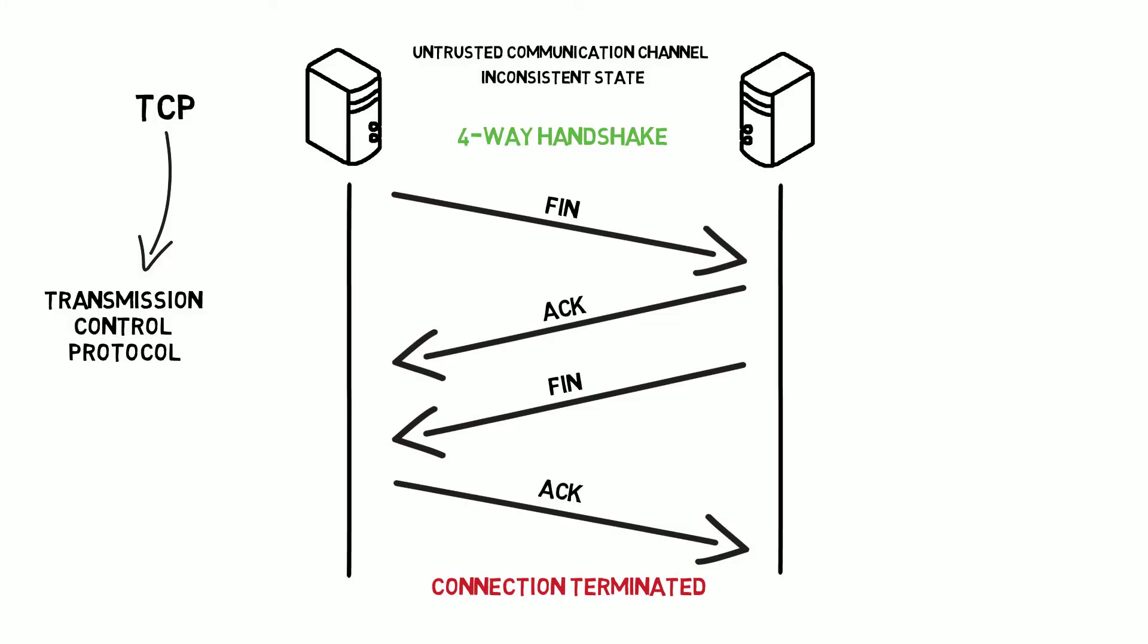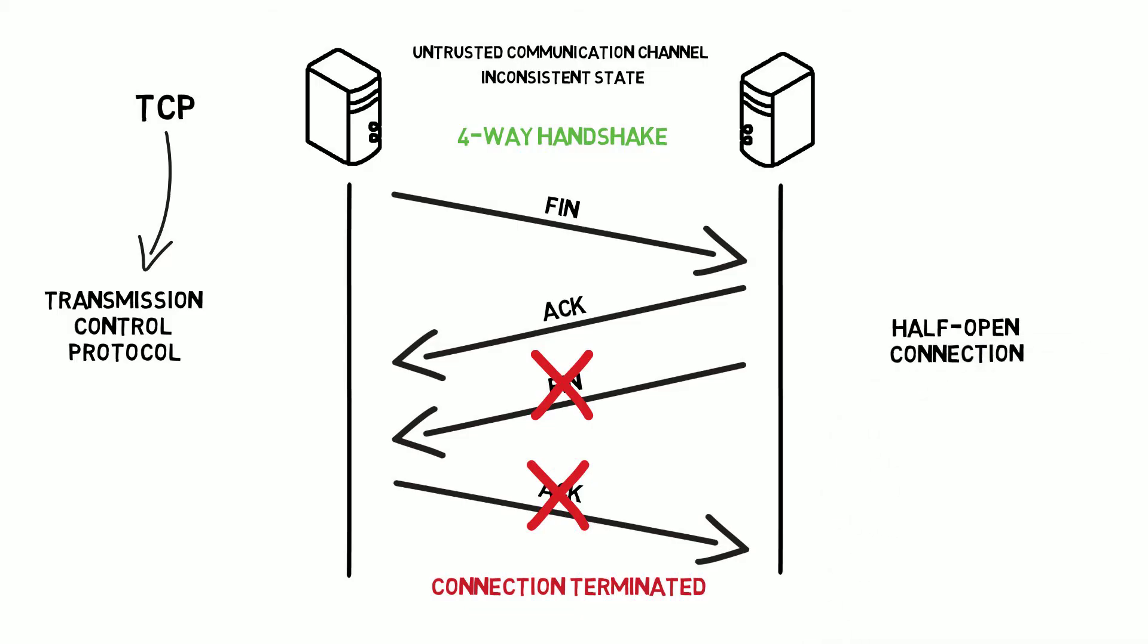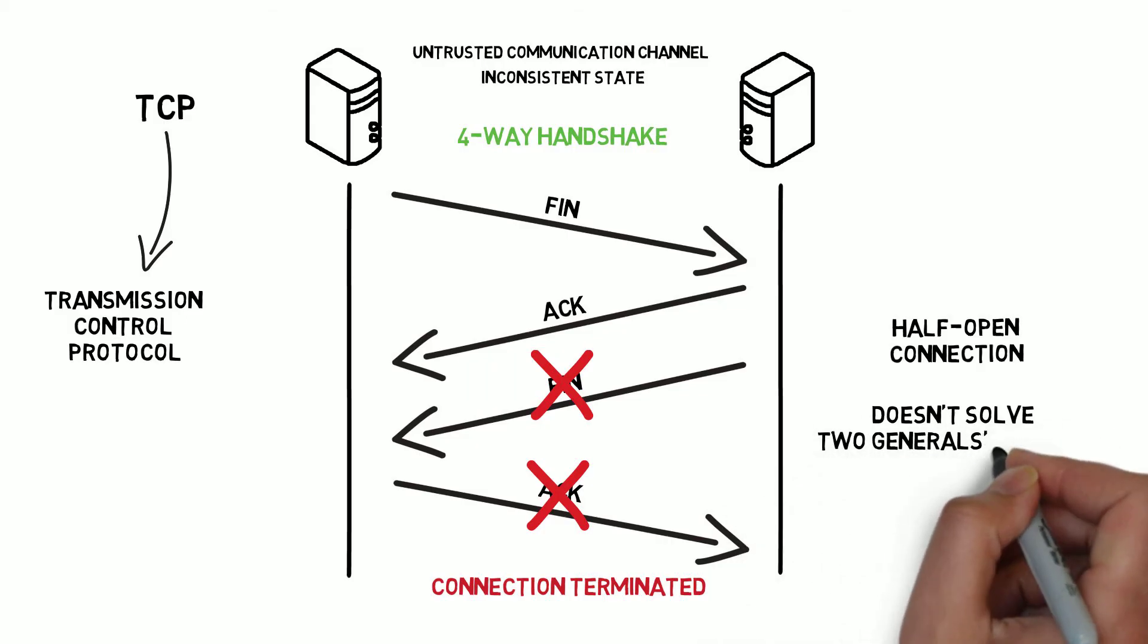When, for example, the second FIN message is lost, we end up with a half-open connection, where one side is not aware that the connection has been closed. That's why, even though TCP is a very reliable protocol, it doesn't solve the two generals problem.